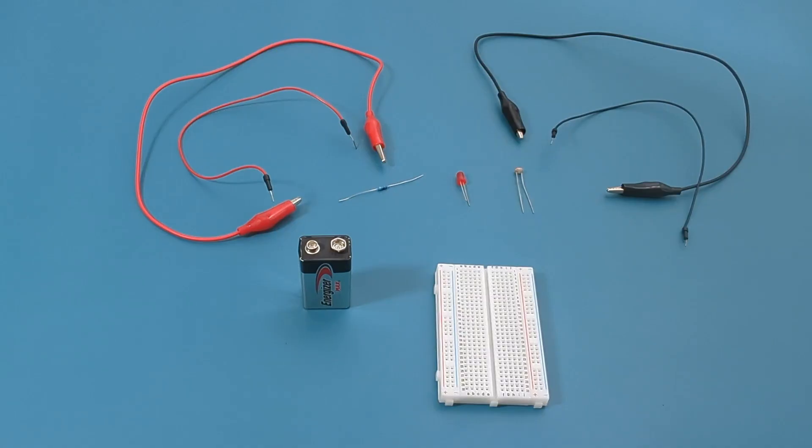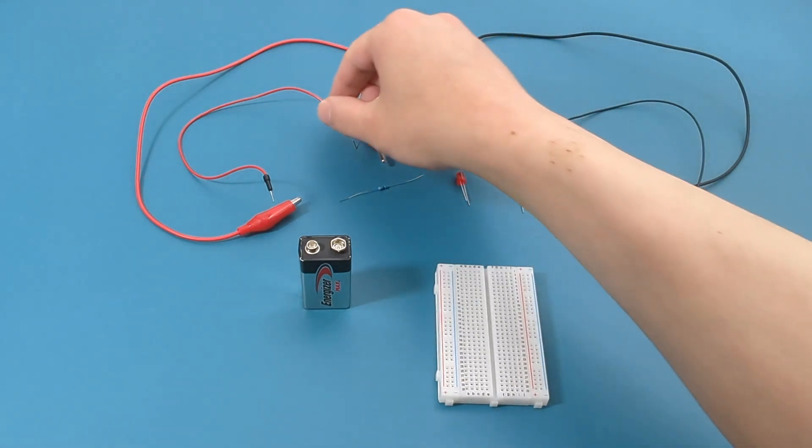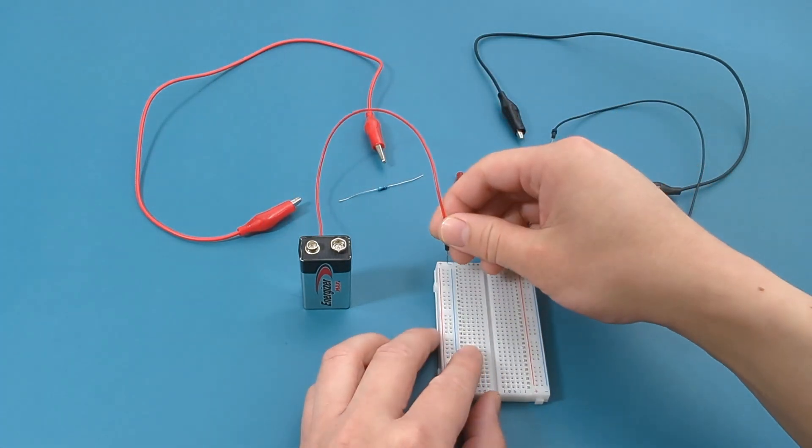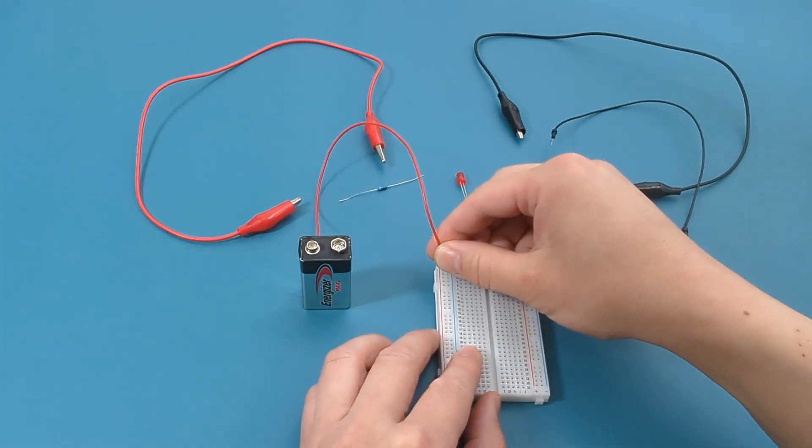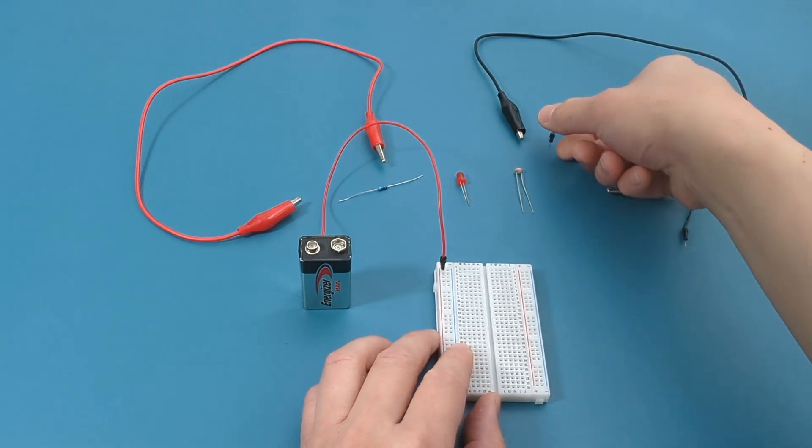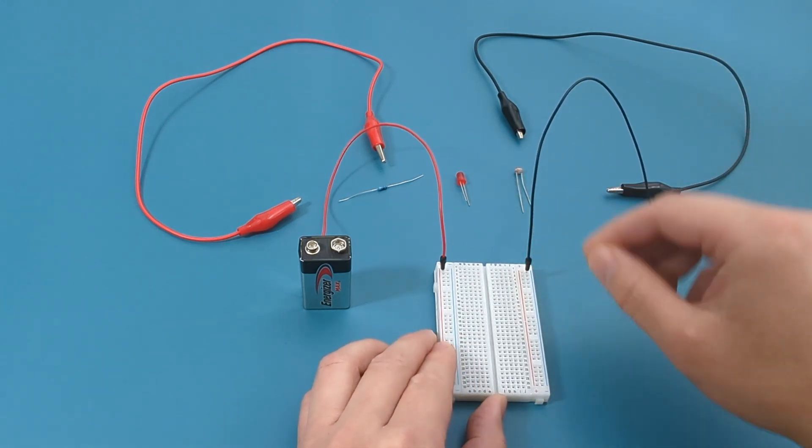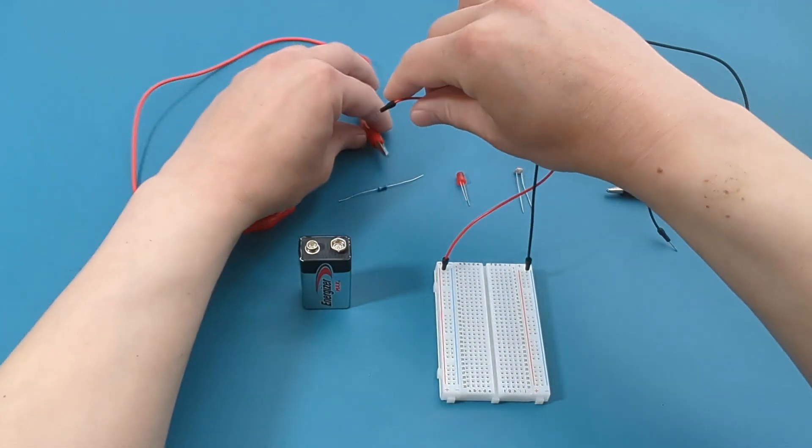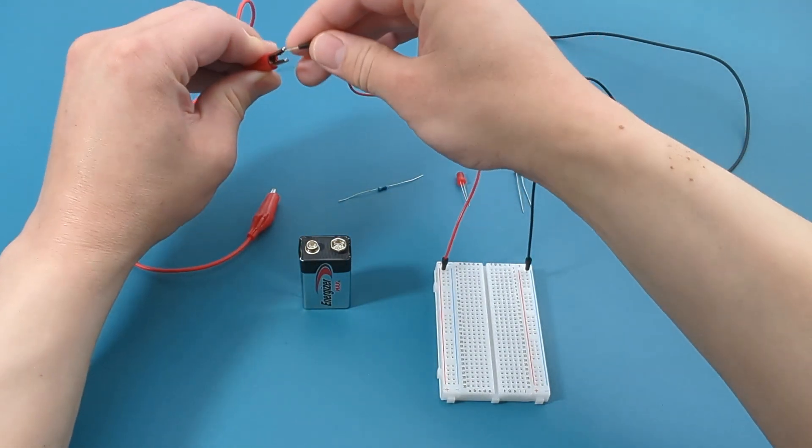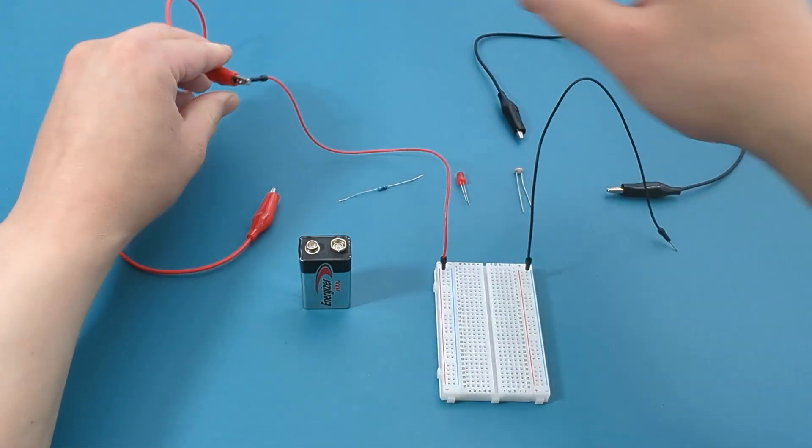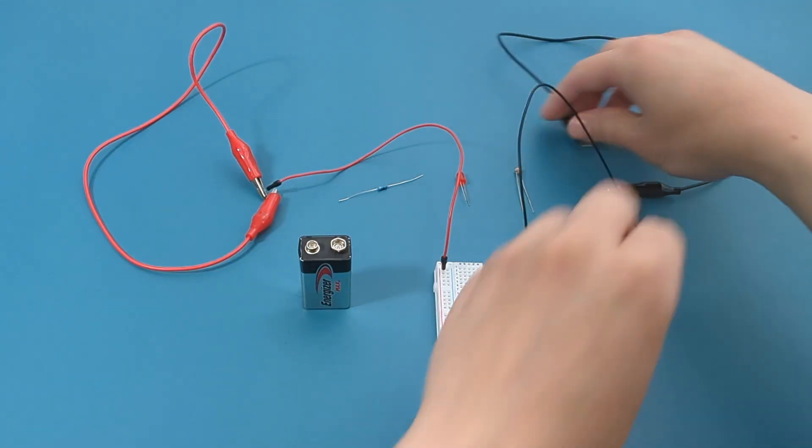Now it's time to set up this circuit. Start by inserting the red jumper wire into the positive side of the breadboard. Insert the black jumper wire into the negative side of the breadboard. Connect the red jumper cable to the red jumper wire. Connect the black jumper cable to the black jumper wire.